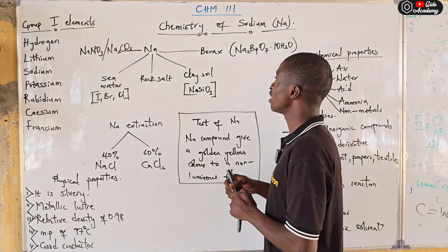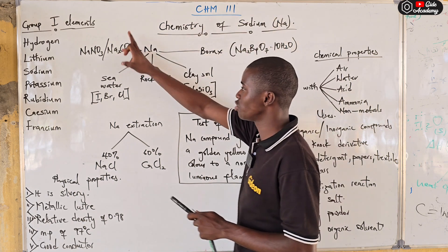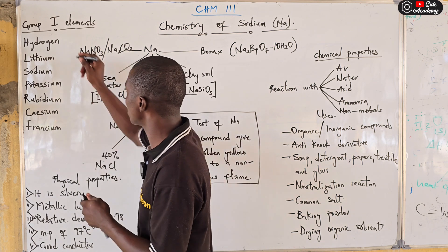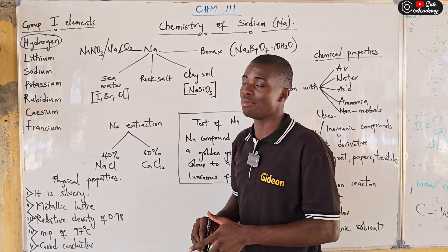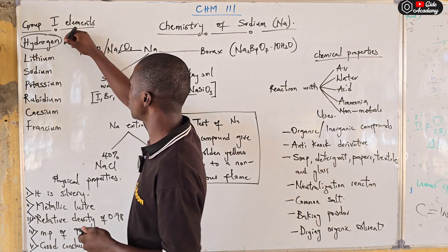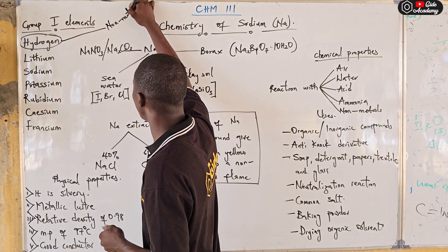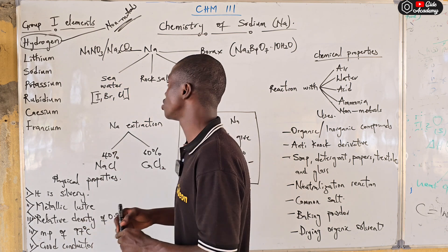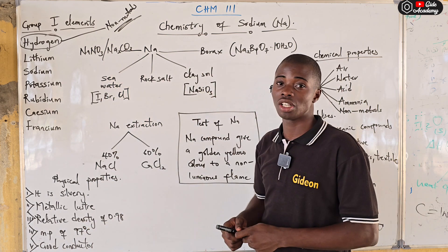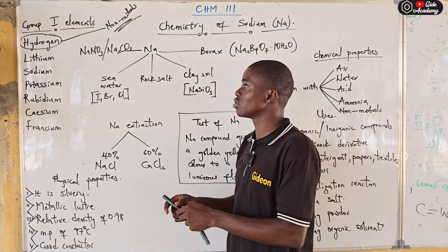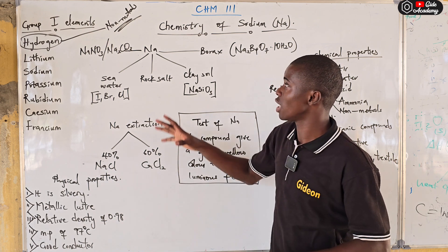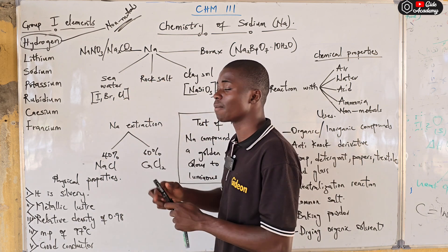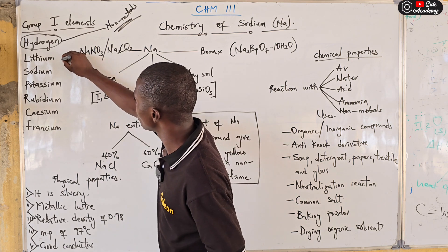The very first element is sodium. In Group 1 we have hydrogen, lithium, sodium, potassium, rubidium, cesium, and francium. As long as we are dealing with metals, we don't consider hydrogen as a metal. Hydrogen is considered a non-metal — and please, don't say hydrogen is a metalloid; it is never a metalloid. Hydrogen is a non-metal.